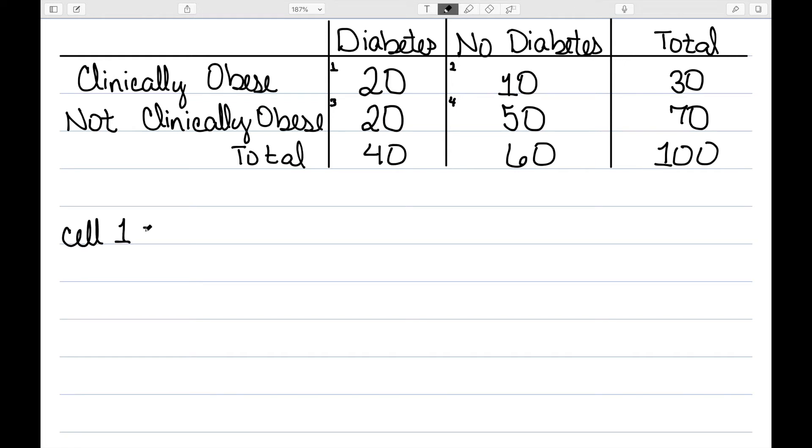Let's start with cell one. The column total is 40, the row total is 30 divided by the overall total of 100. And if I work this out, I get 12. So I'm going to write a 12 in parentheses here so we can remember this.